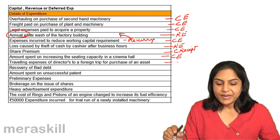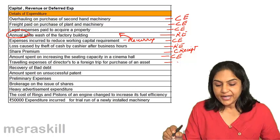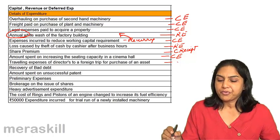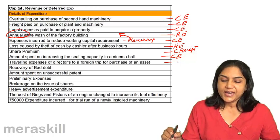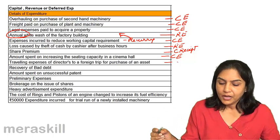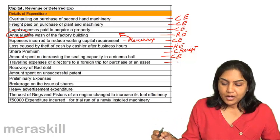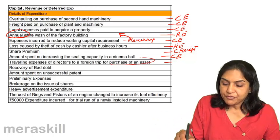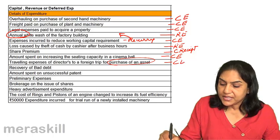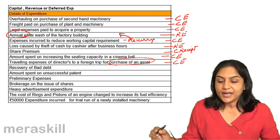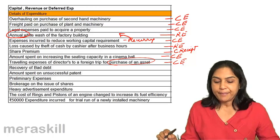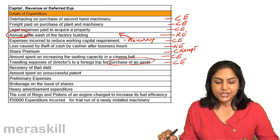Traveling expenses of a director for a foreign trip to purchase an asset. Since these are expenses incurred for the purchase of an asset, this should be a capital expenditure.